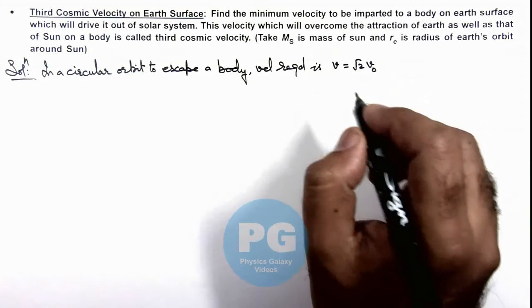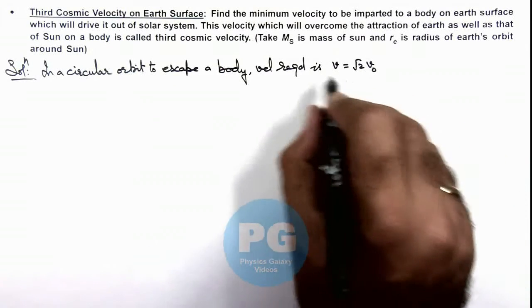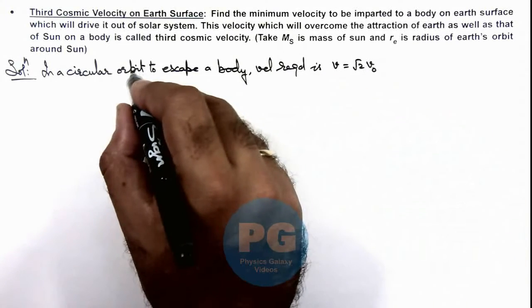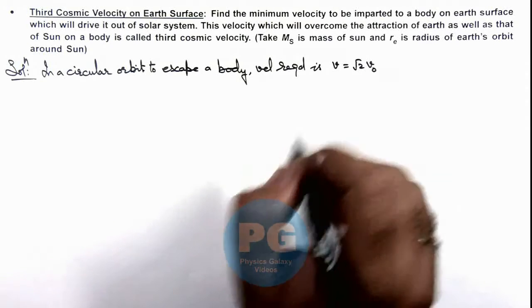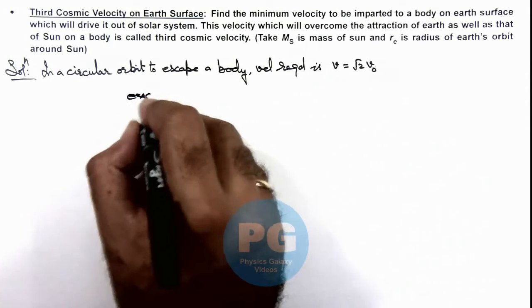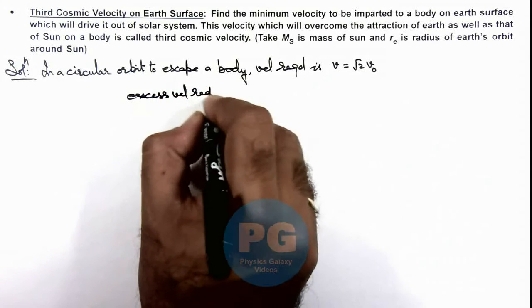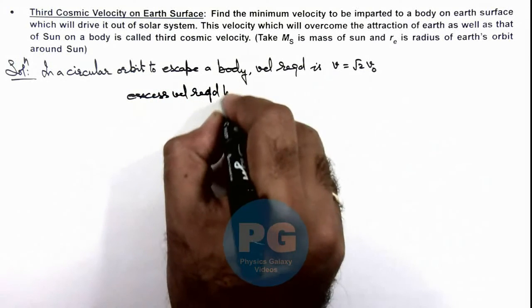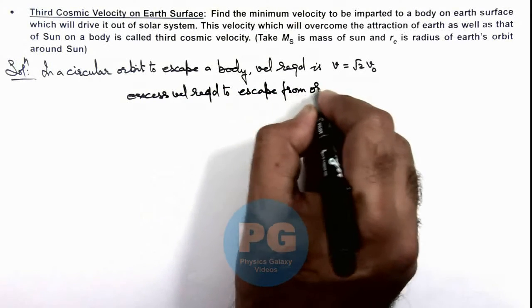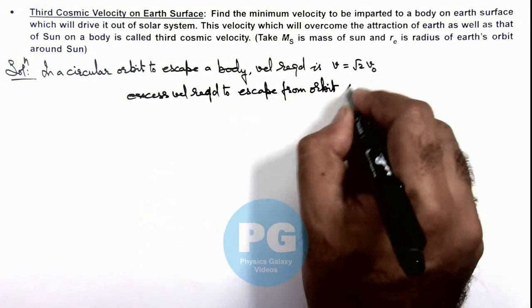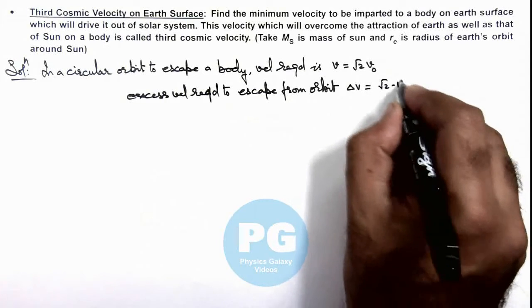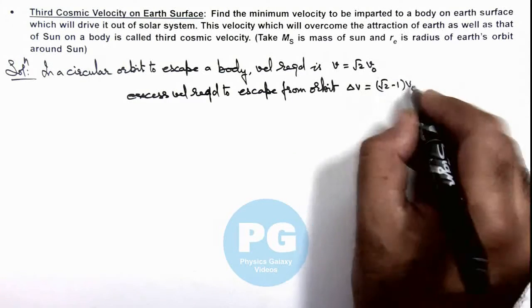So if we talk about excess velocity which is to be imparted on a body so that it'll escape from the orbit of any gravitational attraction center, then we can write excess velocity required to escape from orbit. This can be written as delta v is equal to root 2 minus 1 times v_0, if v_0 is the orbital velocity.